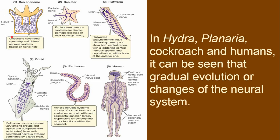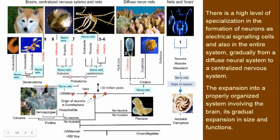There is a high level of specialization in the formation of neurons as electric signaling cells and also in the entire system, gradually from the diffuse neural system to the centralized nervous system.